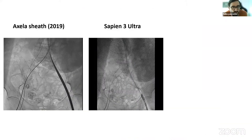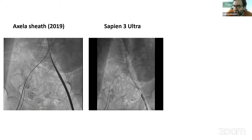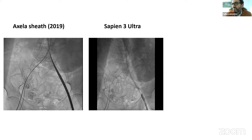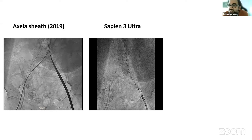Second nightmare. In 2019 we were the first in Europe to try the Axella sheath and Sapien 3 Ultra. We experienced at least four cases where you put the sheath, then put the valve, and the valve couldn't go through. No matter how hard you tried, it was like a competition of who was the strongest interventional cardiologist in the lab. Everybody tried and no one succeeded — there was no way to get the valve through the Axella sheath. Do you have any experience like that?